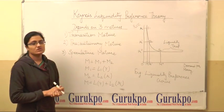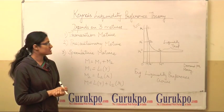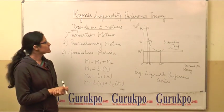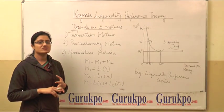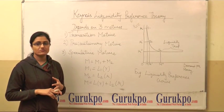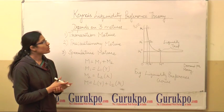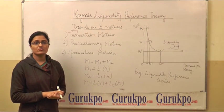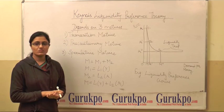These are the three motives of Keynes on which our demand for money depends. We can conclude that it depends upon level of income and the changes in rate of interest. That's all on this topic. For more information, you can log on to www.gurukpo.com. Thank you.